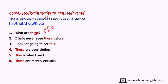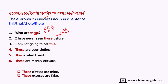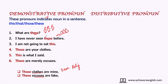'I have never seen those before' — if pointing to some houses, 'those' indicates the houses. These words are used to demonstrate or indicate something. More examples: 'I am not going to eat this. Those are your clothes. This is what I said. These are merely excuses.' These words replace nouns. But if such words come before a noun, they become demonstrative adjectives. If there is no noun after them, they are demonstrative pronouns.